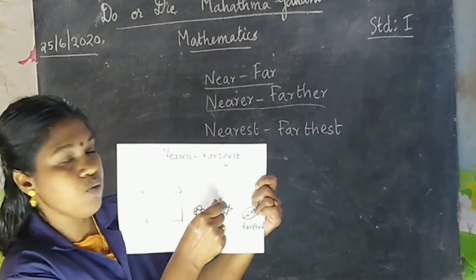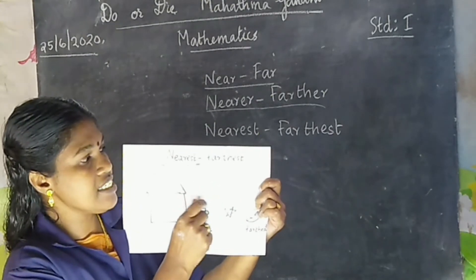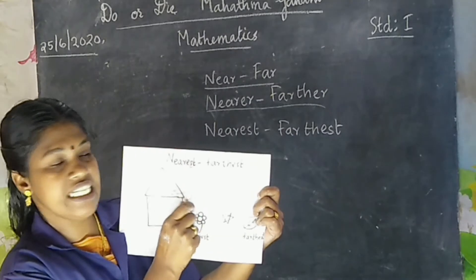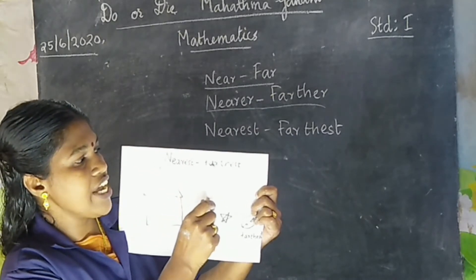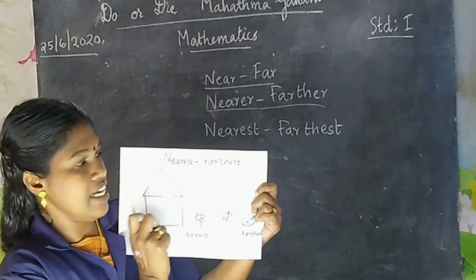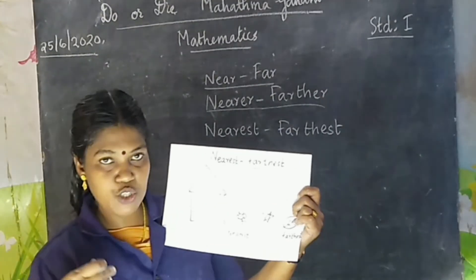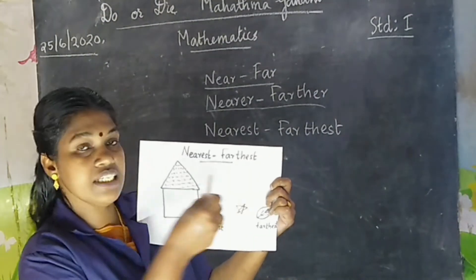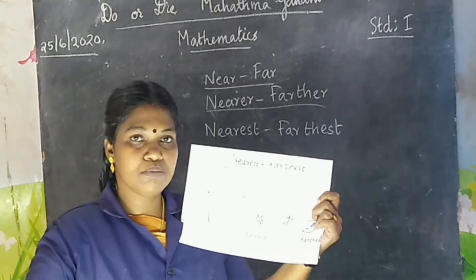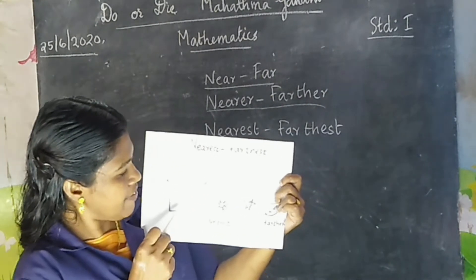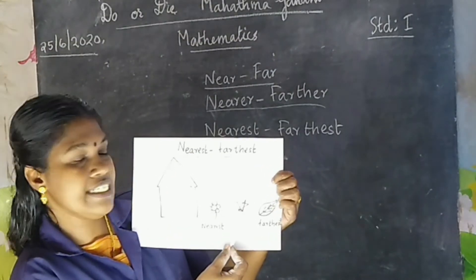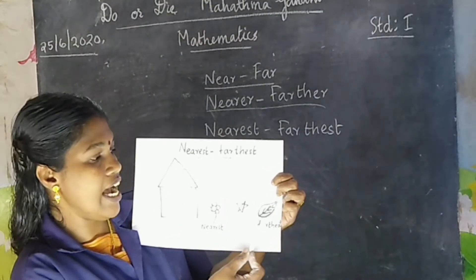Nearest, farthest. N-E-A-R-E-S-T, nearest. F-A-R-T-H-E-S-T, farthest. Here we have a house, a flower, a star, and a leaf.